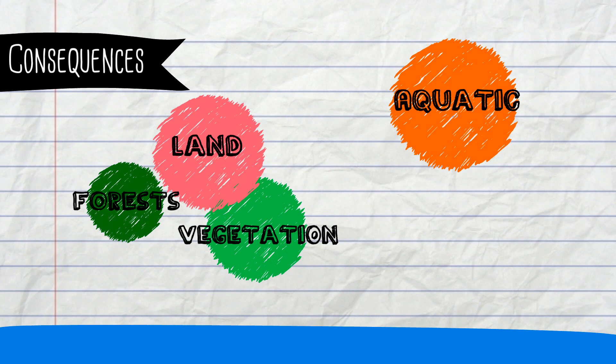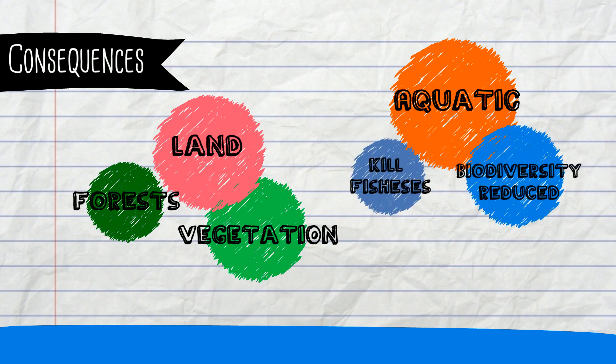In the aquatic environments, the lower pH can kill fishes, and in general, the biodiversity is reduced. The acid rain contributes to the corrosion of statues and other metals.